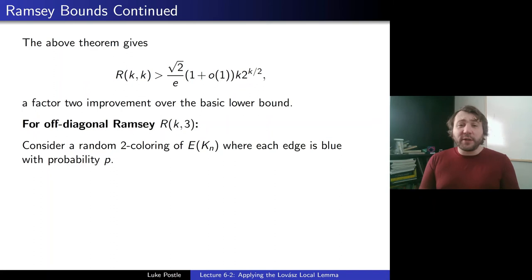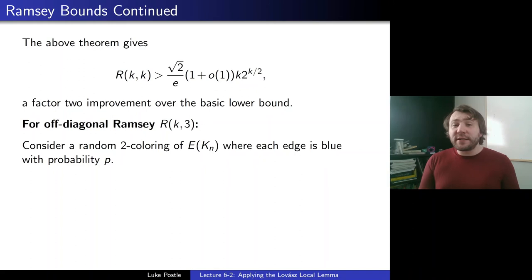We consider a random two-coloring of E(Kn), as done before with union bound and alteration. Here we'll do it with the Local Lemma, and the key is you don't color every edge half-and-half. We color each edge blue with probability p — a knob we'll choose later to optimize. So we consider a random two-coloring where an edge is blue with probability p and red with probability 1 − p.